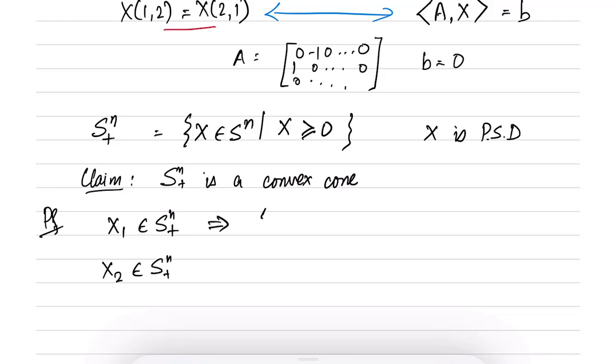So this implies that X1 is a symmetric matrix. And what is the definition of positive semi-definiteness? If you remember, we had this definition that U^T X1 U is greater than equal to 0 for all U.